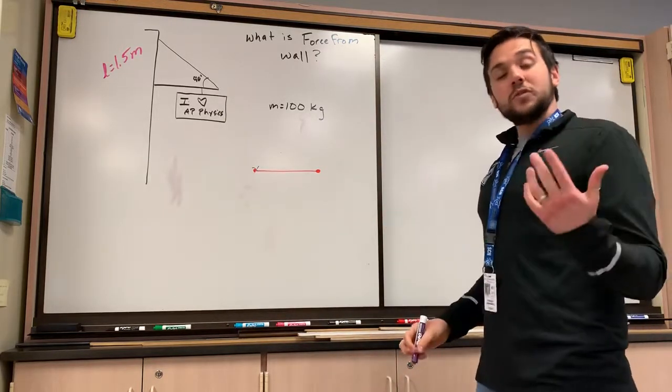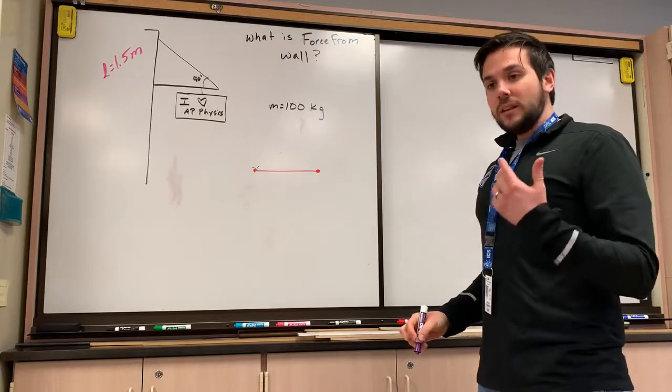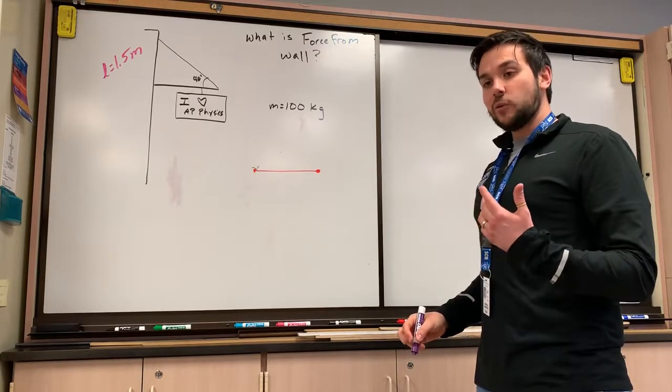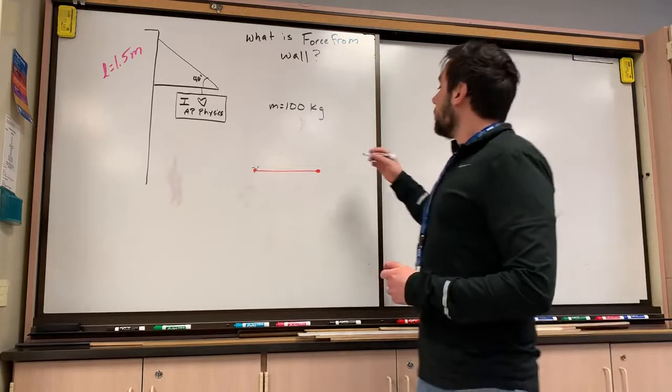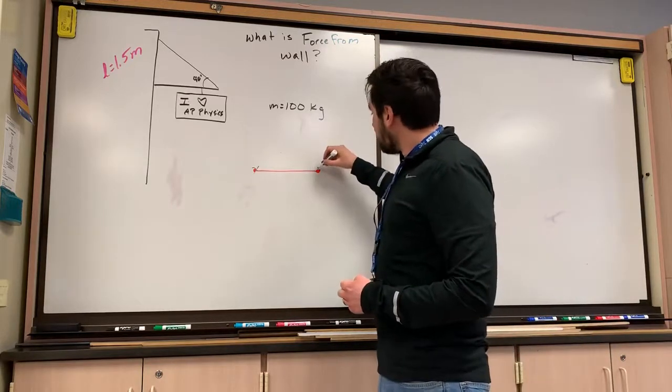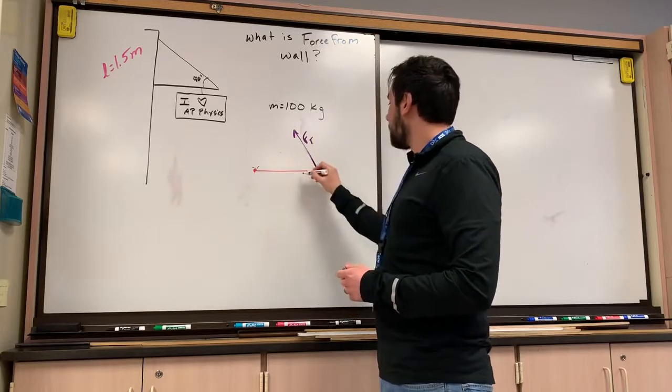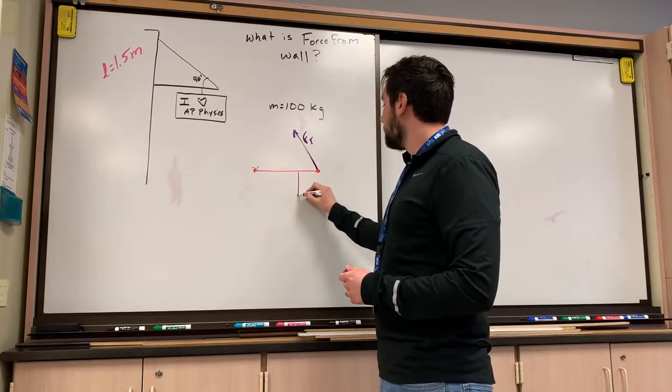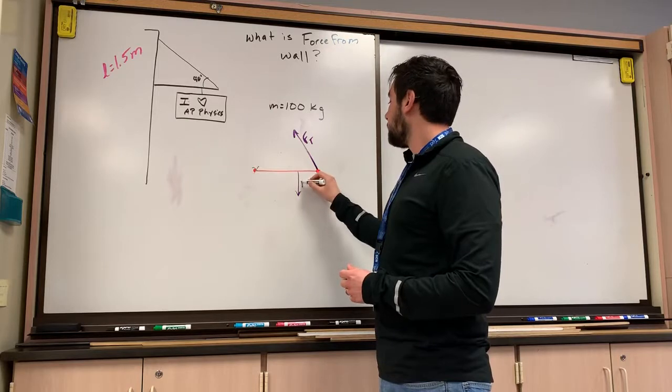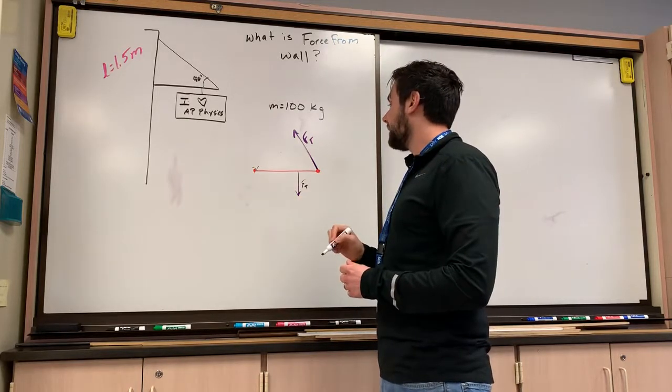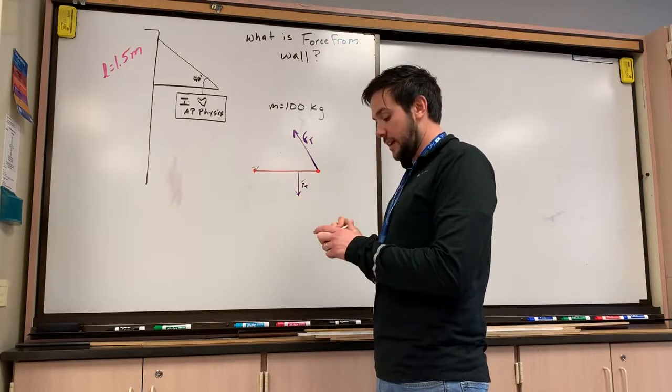Now, there are a few forces at play between the sign and the wall here. We're going to first draw our force of tension for the string. And then we're also going to draw the force pulling down, another force of tension from the sign.